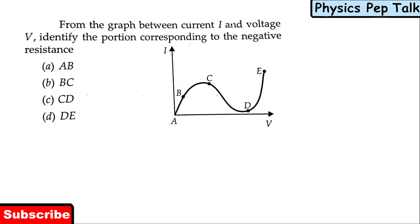From the graph between current I and voltage V, identify the portion corresponding to negative resistance. We do not use a negative resistor normally, but there can be a negative resistance region — when I increase the voltage and the current is decreasing, such a portion is called the negative resistance region.